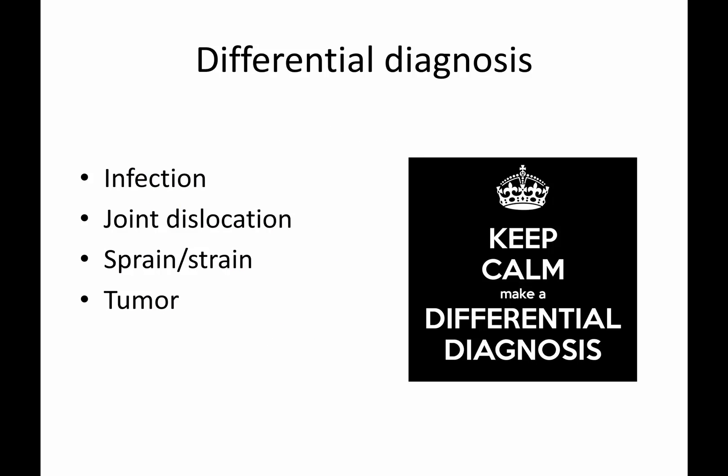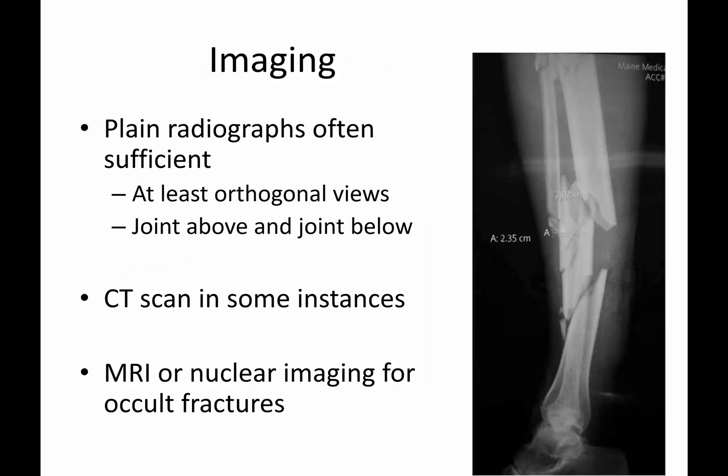The differential can include infection, joint dislocation, perhaps a sprain or strain — like the example I gave with the ankle — or a tumor. Any of these things can cause bone and joint pain that you may have to sort out.